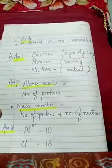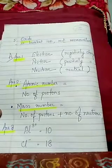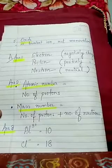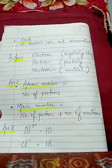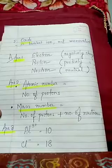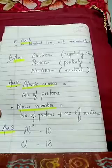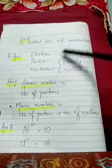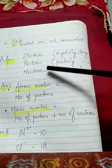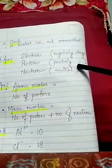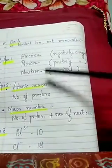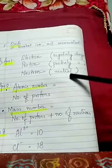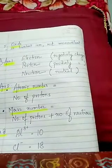Give one characteristic of each. Any characteristic based on charge or mass: electrons are negatively charged, protons are positively charged, and neutrons are neutral.